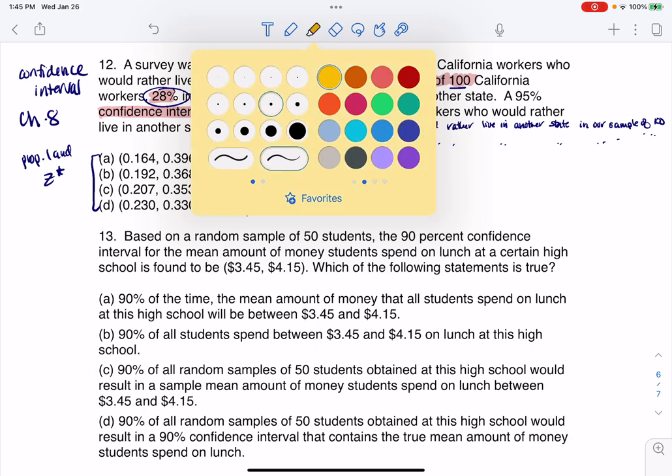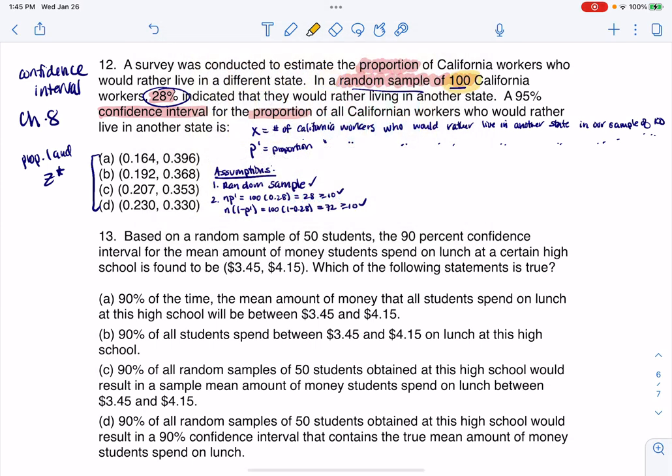So another way of saying that is, when I took my sample of 100 Californians, 28 said I'd like to live in another state, and 72 said they didn't. The third assumption is always that sample size is small relative to my population. My sample size was 100. If I multiply that by 10, that's 1,000. Real safe to say there's at least 1,000 folks working in California. If I wanted to title this, this would be a one-sample proportion Z-star confidence interval.